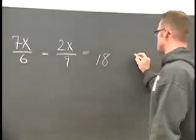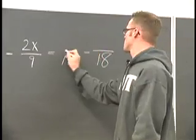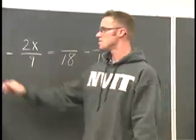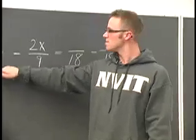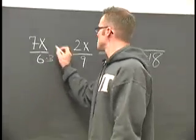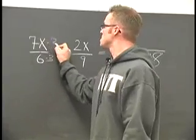We can set it up like this. In order to change this 6 into an 18, we're going to have to times it by 3. What we do at the bottom, we're also going to have to do the top.